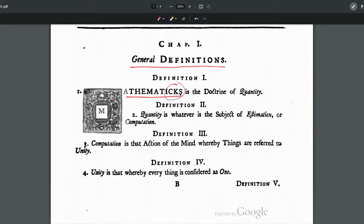Now, you'll notice that this spelling is a little strange. Mathematics in modern times does not have a K in it, but the reason why the spelling is different is because this book was originally published in the year 1735, that's almost 300 years ago.